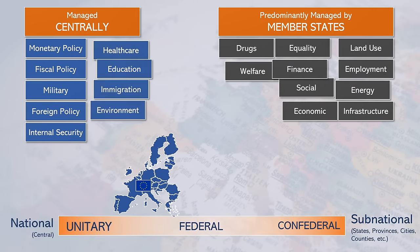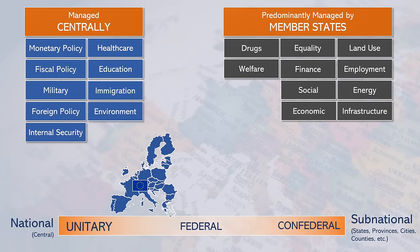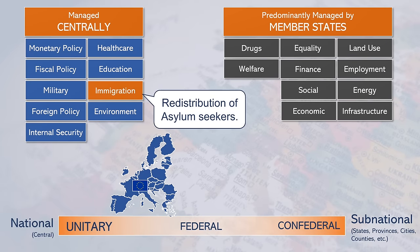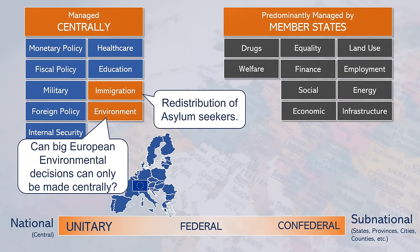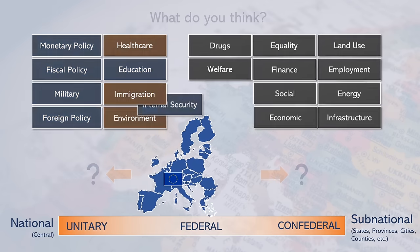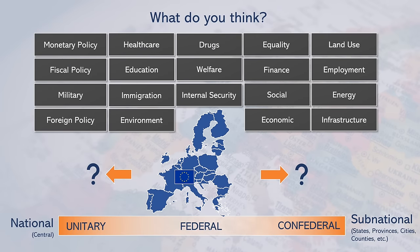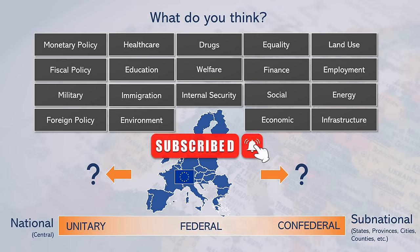Should the EU go even further, though? For example, what about immigration and border control? Or the environment? Or even healthcare? Let me know in the comments what policies you think make sense on a federal level, and which don't.